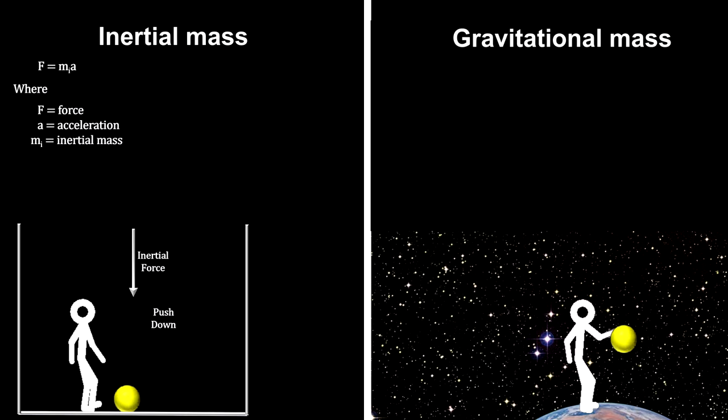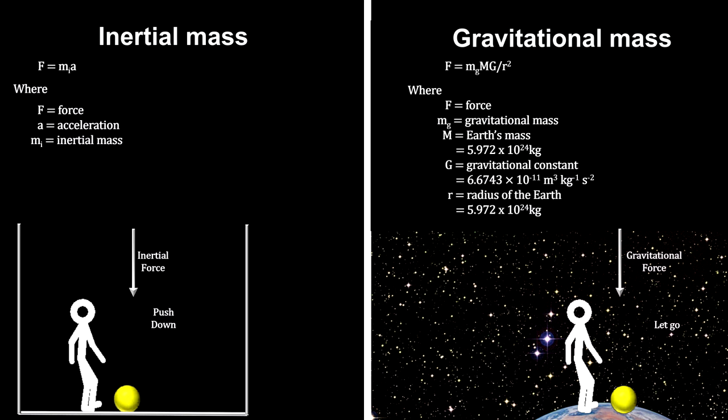The other was gravitational mass. Gravitational mass was defined by how strong an attractive force it exerted on other objects. It is described by Newton's universal gravitation formula.